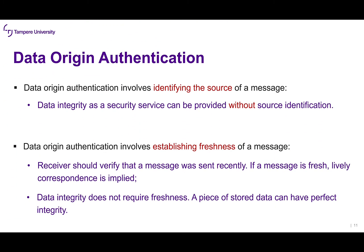Data origin authentication involves identifying the source of a message. Data integrity as a security service can be provided without source identification — keep in mind that data integrity is a different thing from data origin. Data origin authentication also involves establishing freshness of a message, meaning the receiver should verify the message was sent recently. If a message is fresh, lively correspondence is implied. We need to know that a message was sent now and is not a replay of an old message.